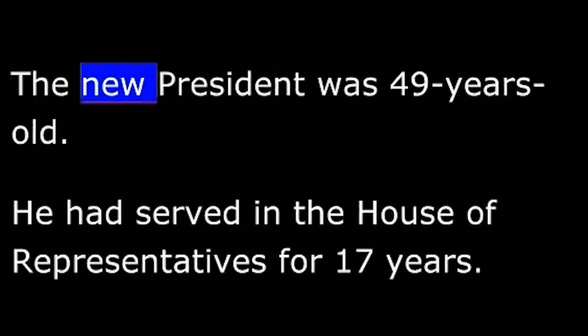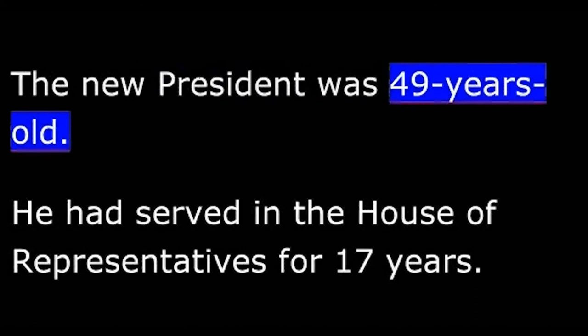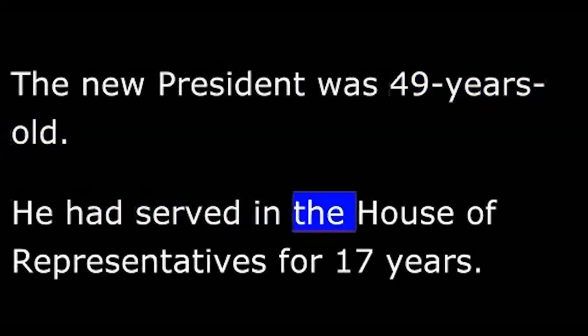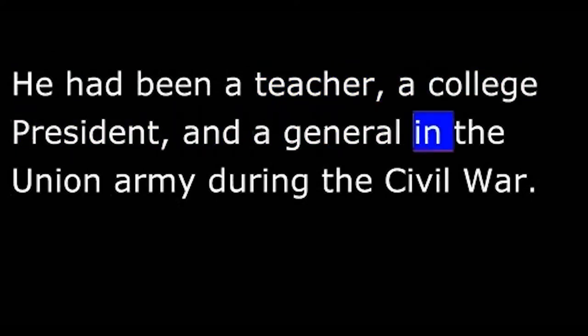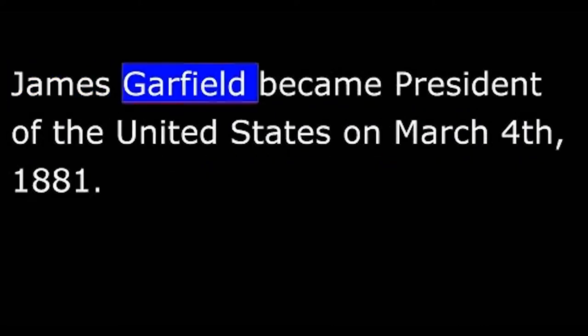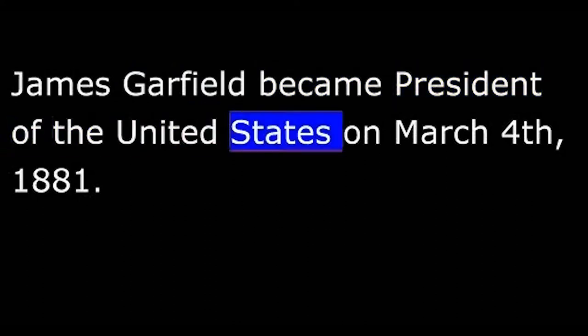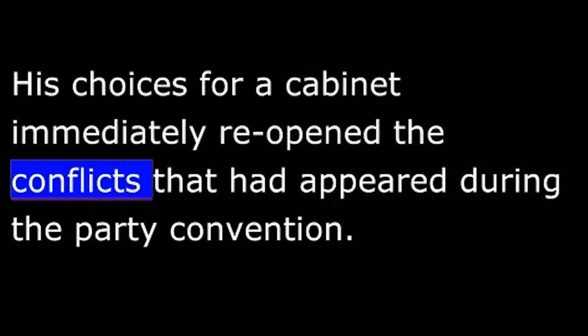The new president was 49 years old. He had served in the House of Representatives for 17 years. He had been a teacher, a college president, and a general in the Union Army during the Civil War. James Garfield became President of the United States on March 4, 1881. His choices for a cabinet immediately reopened the conflicts that had appeared during the party convention.